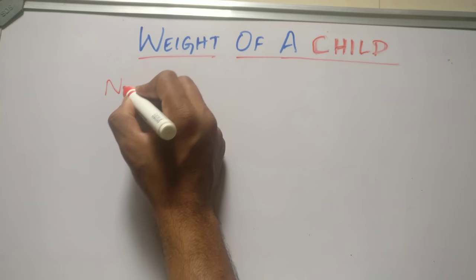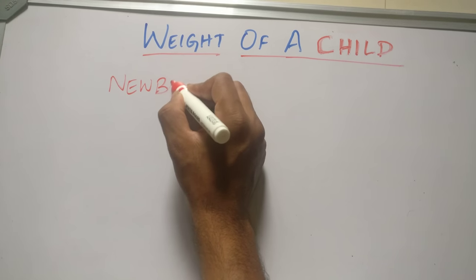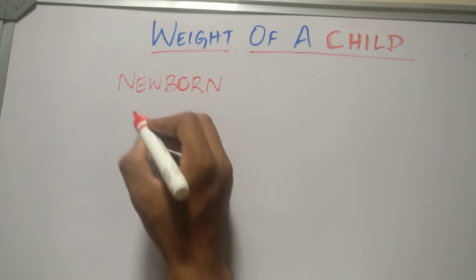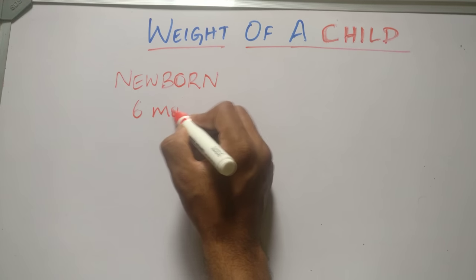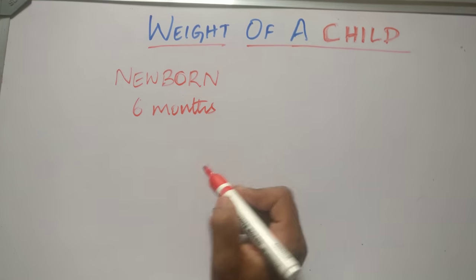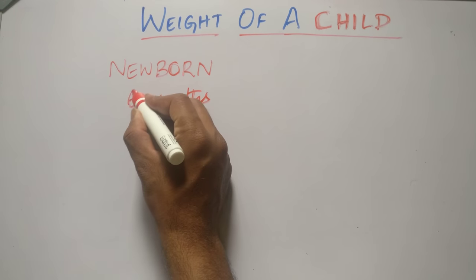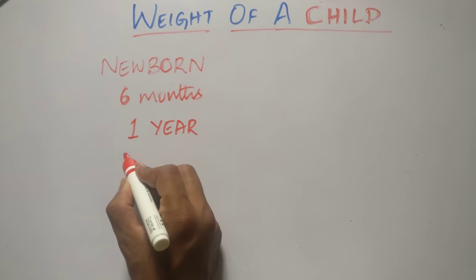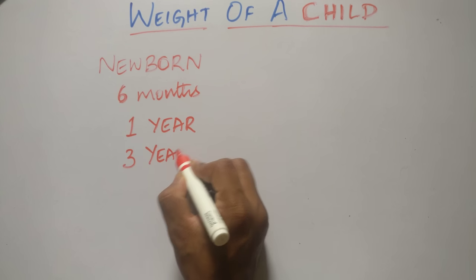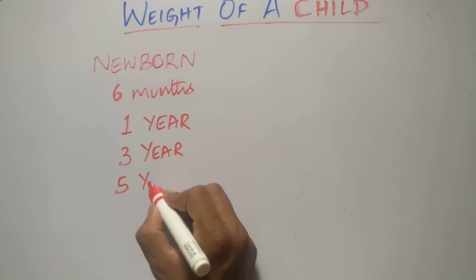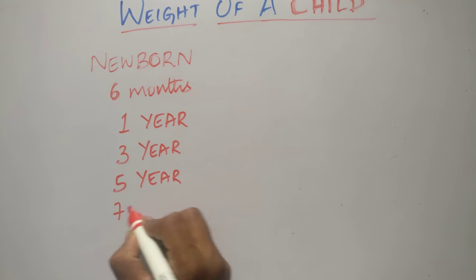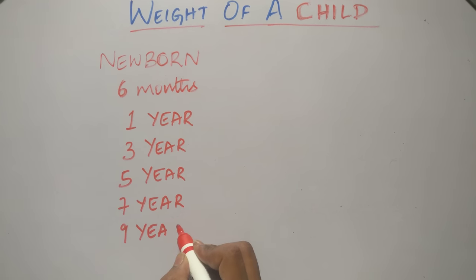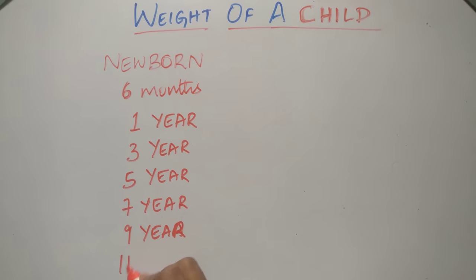I want you to know the weight of the child at the following years. The first thing is a newborn. Next one is at 6 months of age. And from here let us remember the weight of the child for every odd years of age. That is 1 year, 3 year, 5 year, 7 years, 9 years, 11 years.